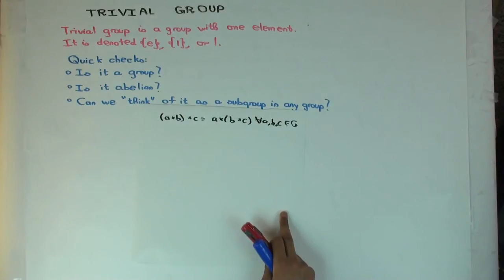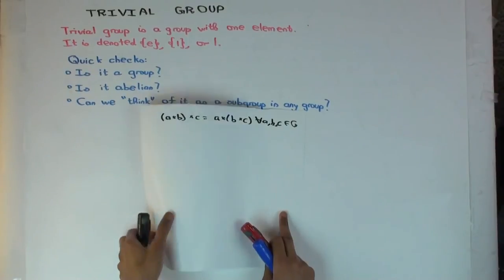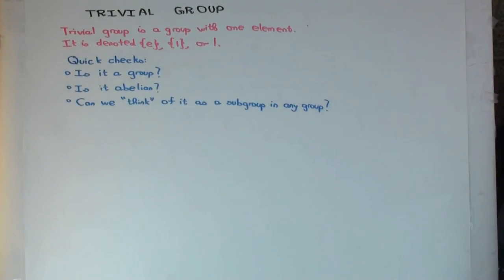What about the other conditions? Is that element the identity element? Yes. Do you have inverses? Yes, the element is its own inverse. The identity element in any group is its own inverse. But the point I'm trying to make is: you don't actually have to check the conditions individually because all the conditions say something like...